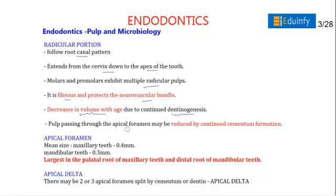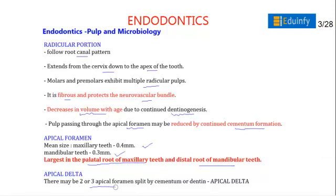The apical foramen may be reduced by continued cementum formation. The size of the apical foramen in maxillary teeth is approximately 0.4 mm and in mandibular teeth it is 0.3 mm. It is largest in the palatal root of maxillary teeth and in the distal root of mandibular teeth. The apical delta consists of two or three apical foramina split by cementum or dentine, forming the apical delta.